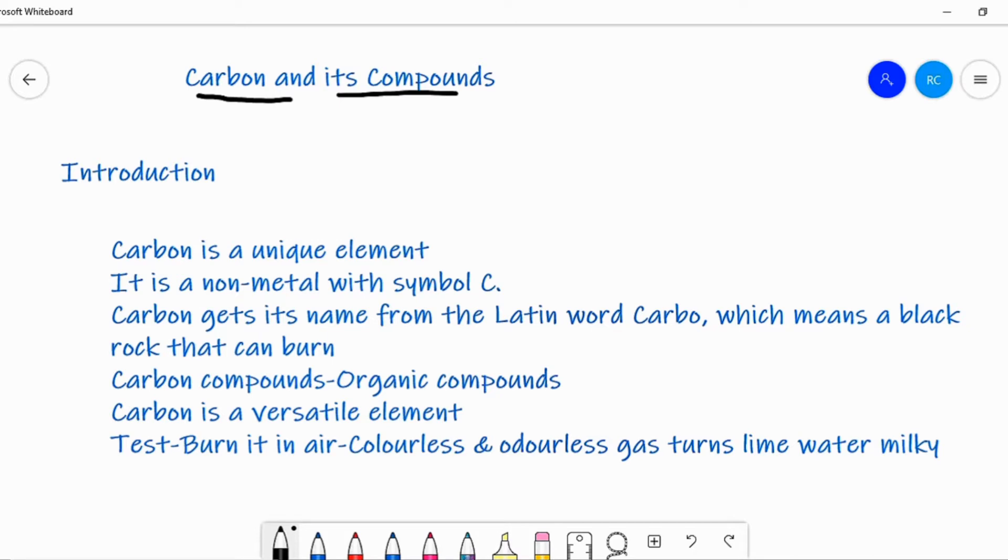Carbon is a unique element. It is a non-metal with symbol C. Carbon gets its name from the Latin word carbo, which means a black rock that can burn.